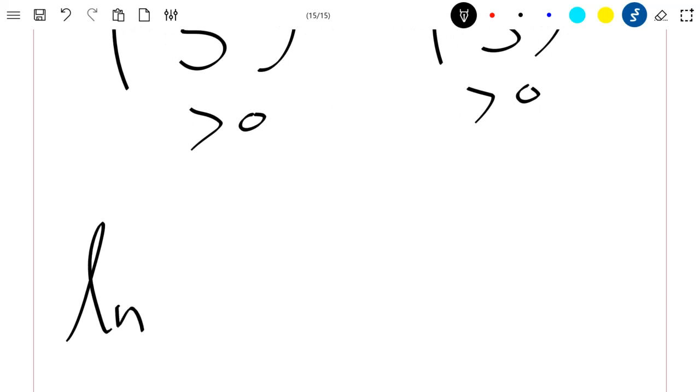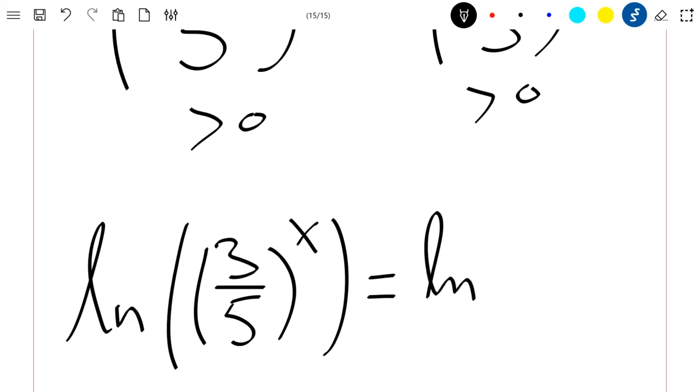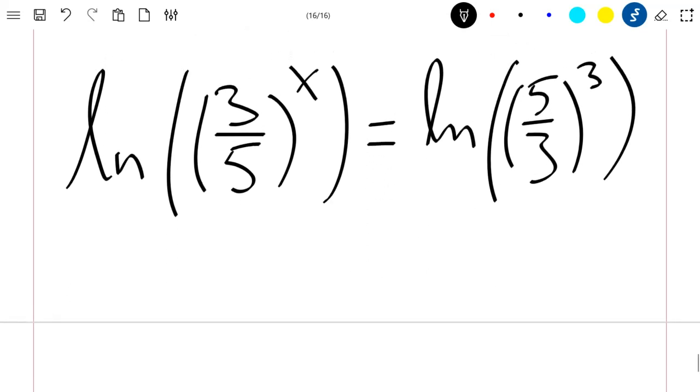This will give us ln of 3 divided by 5 to the power x equals ln of 5 divided by 3 to the power 3.